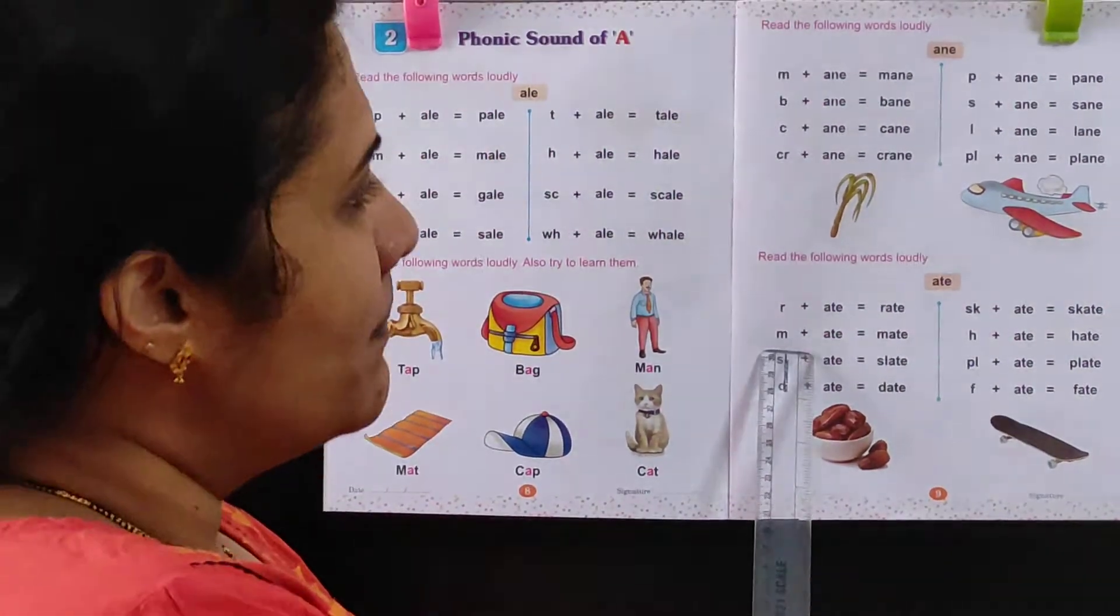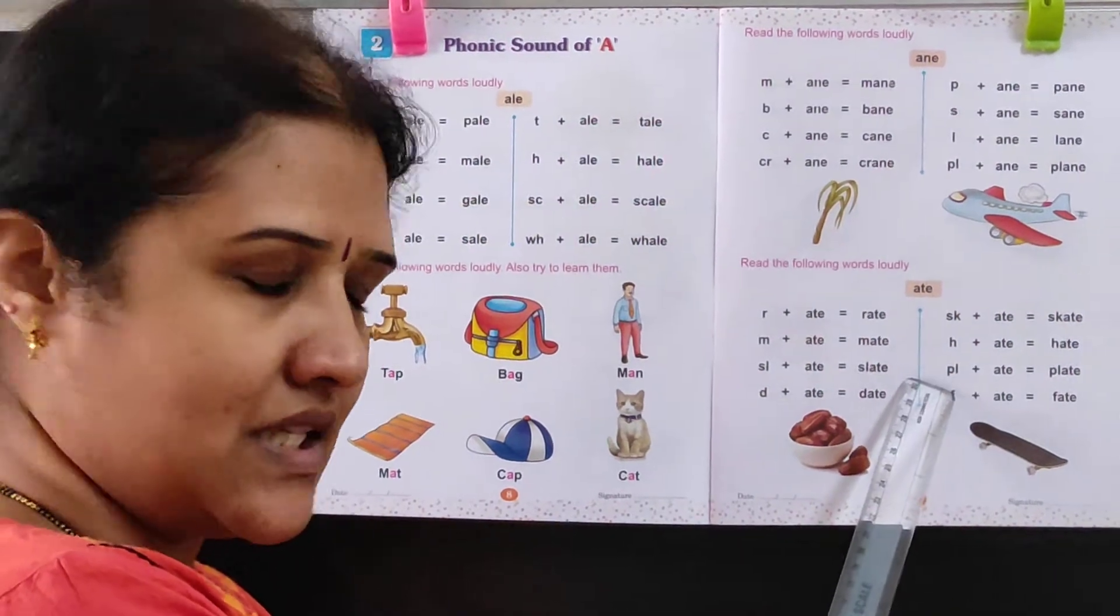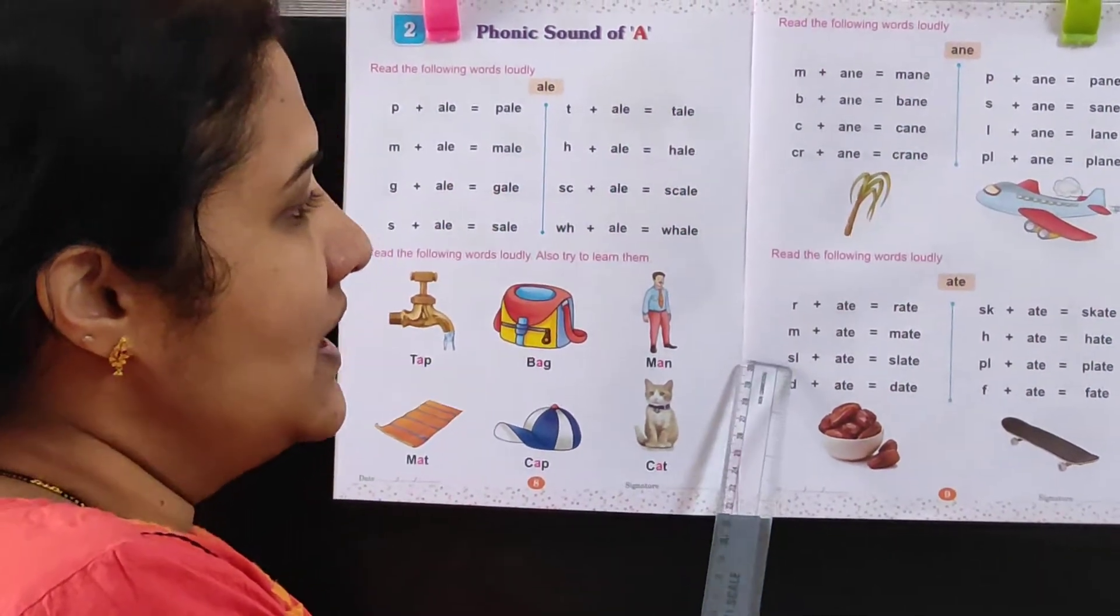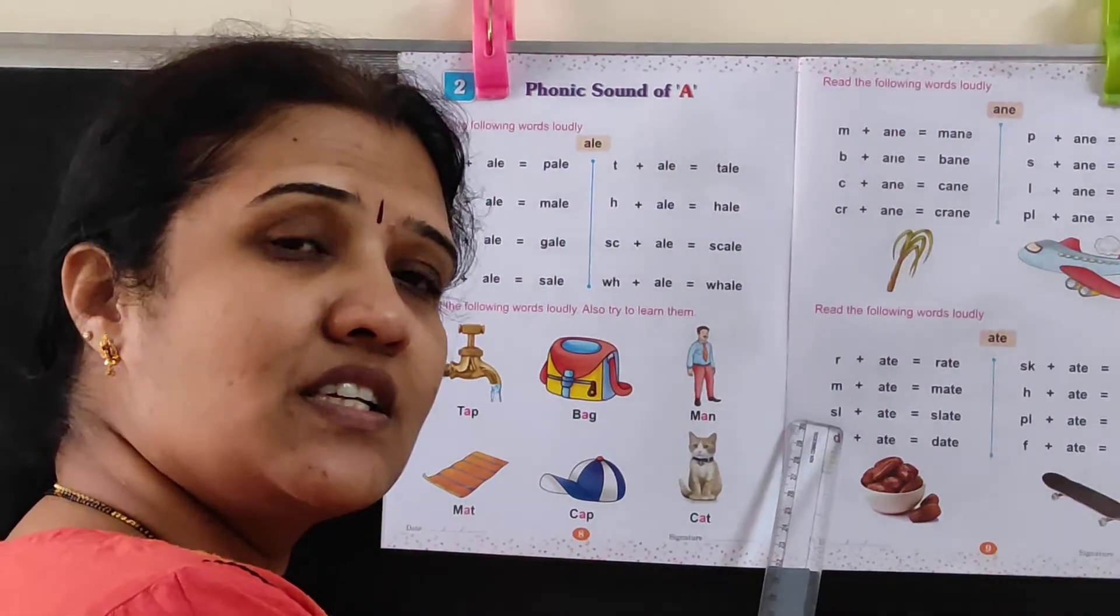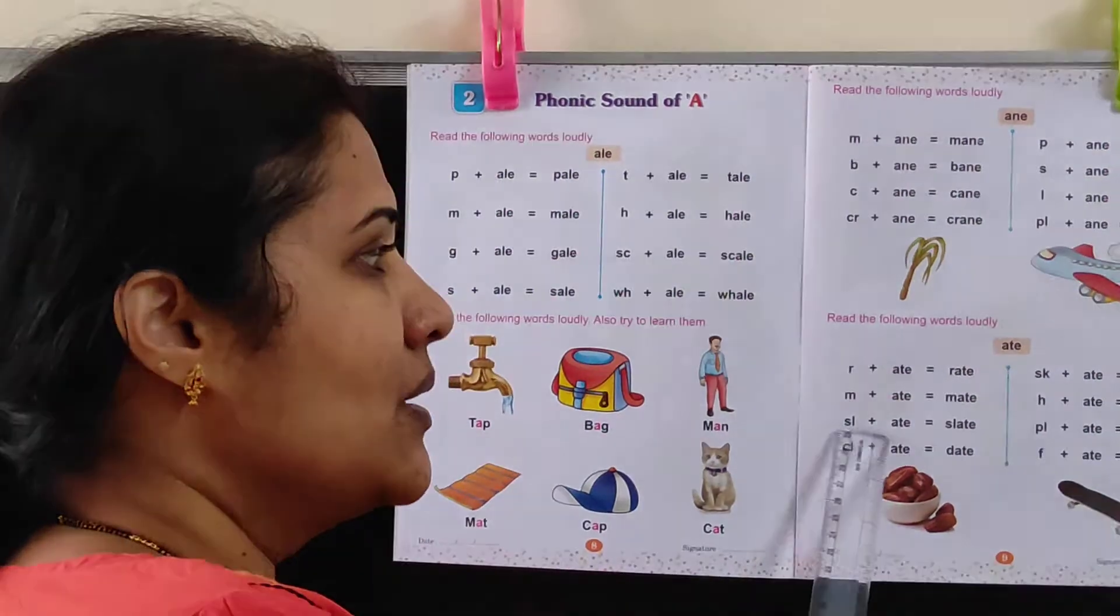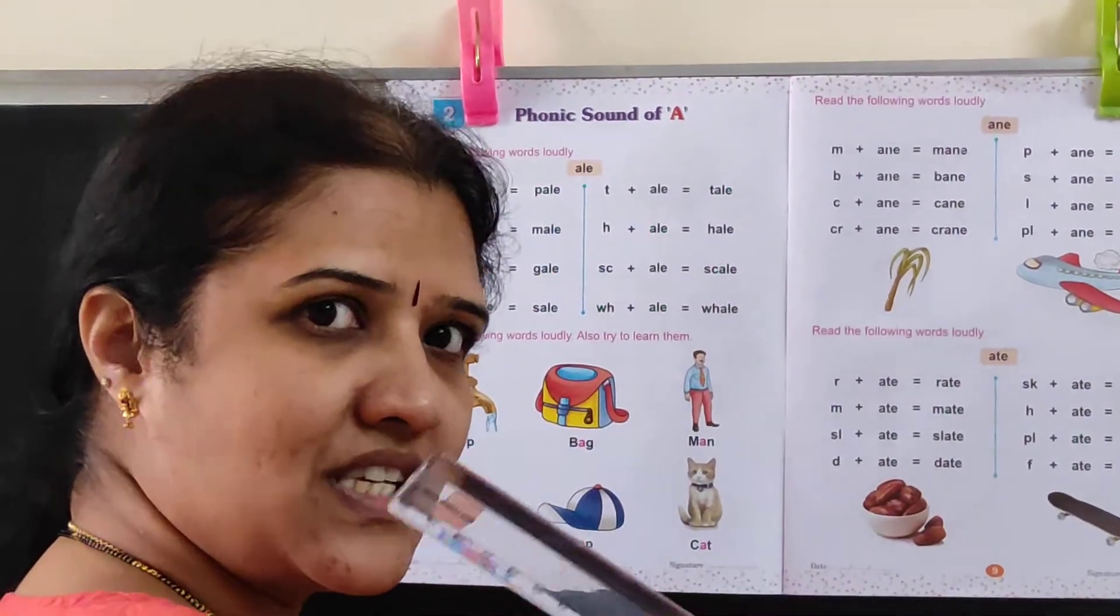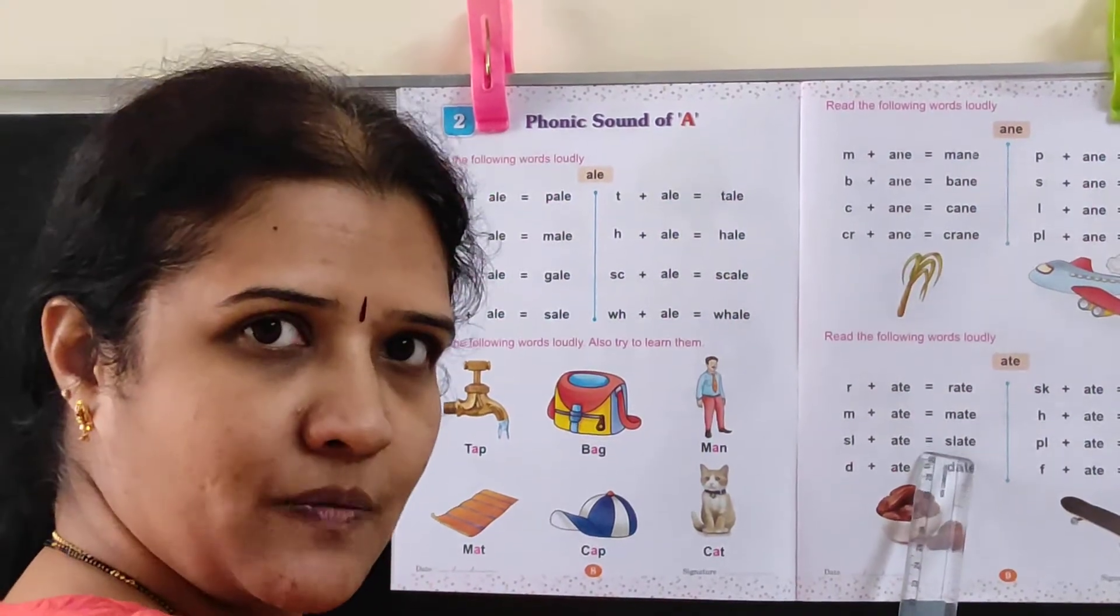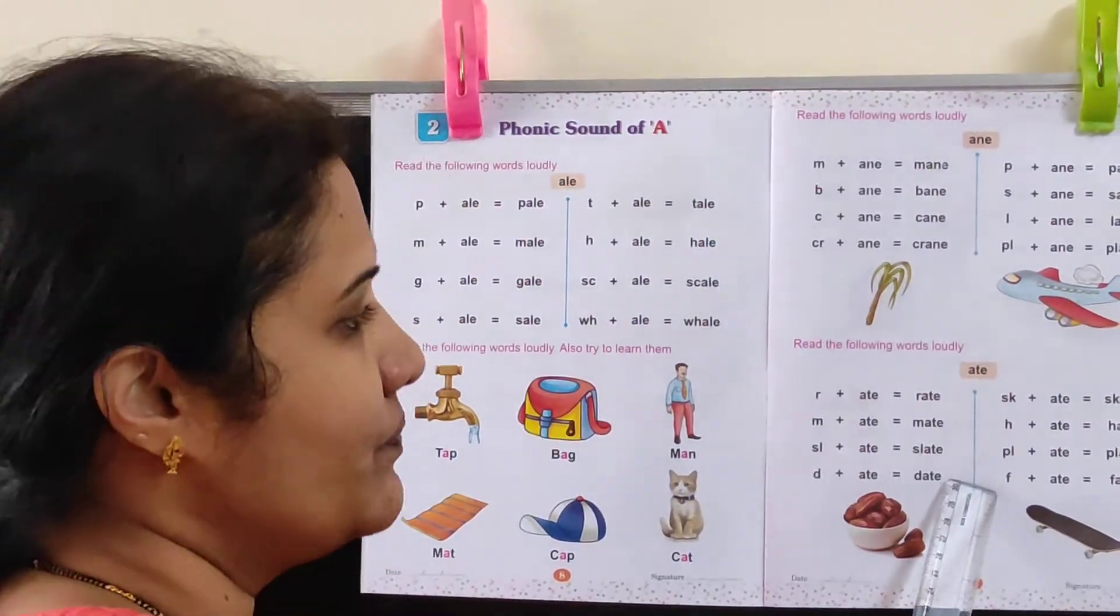M-A-T-E is Mate. M-A-T-E, Mate. Now see here, again two letter words have come. S-L is called Slur. Slur plus ate is Slate. You write on Slates. S-L-A-T-E, Slate.